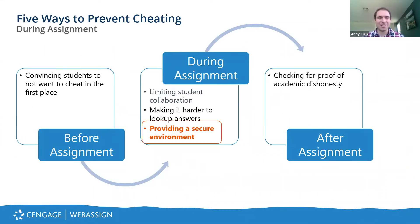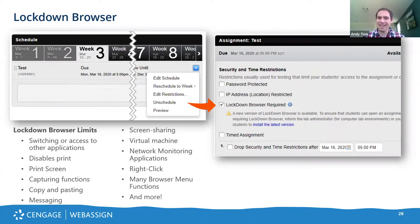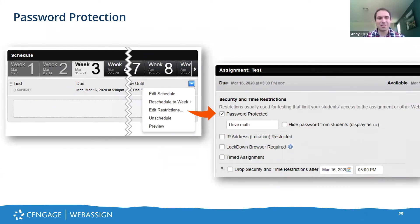In terms of providing a secure environment, lockdown browser is an option available in WebAssign. It essentially limits most everything — students can do very little but work on that assignment while in lockdown browser. Of course, if a student has a phone next to them, lockdown browser won't stop that — it only stops what's on the screen. Passwords are also possible in WebAssign. One strategy: if you have a password-protected exam and are concerned about students re-entering or giving the password away, set a password like 'I love math' at the beginning of the exam and then change it five minutes later so the student can't give it away to somebody else after the exam has started.